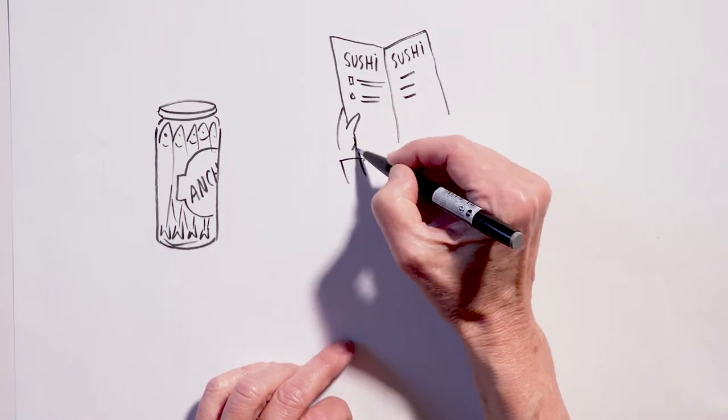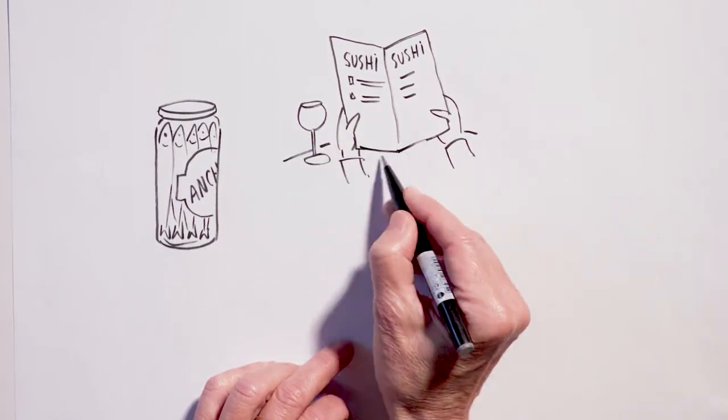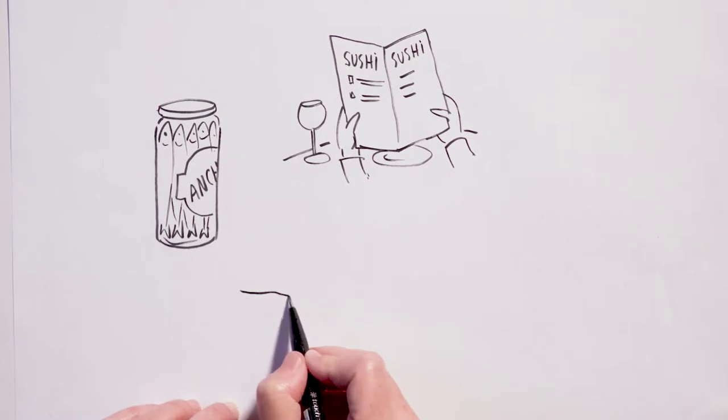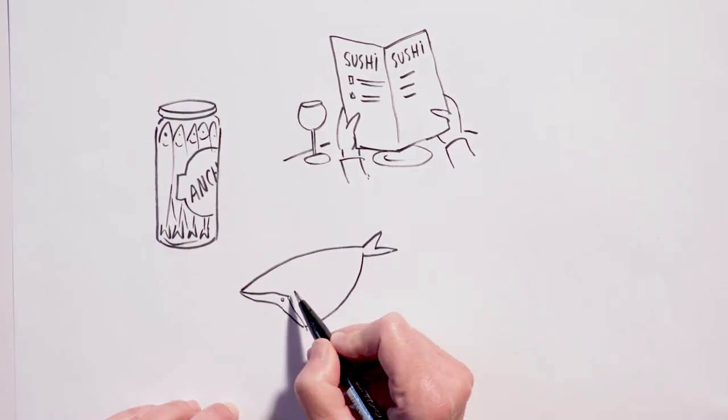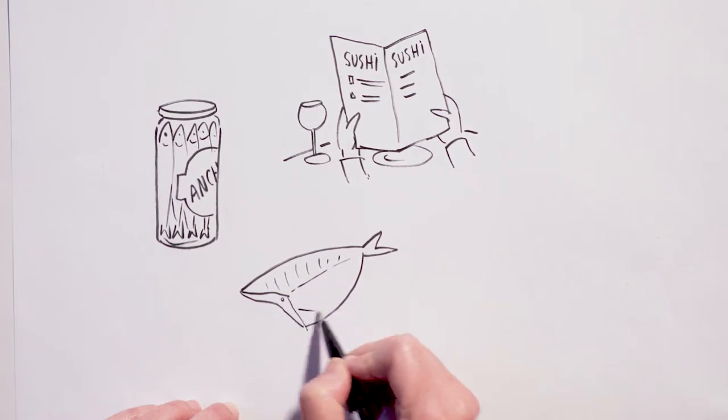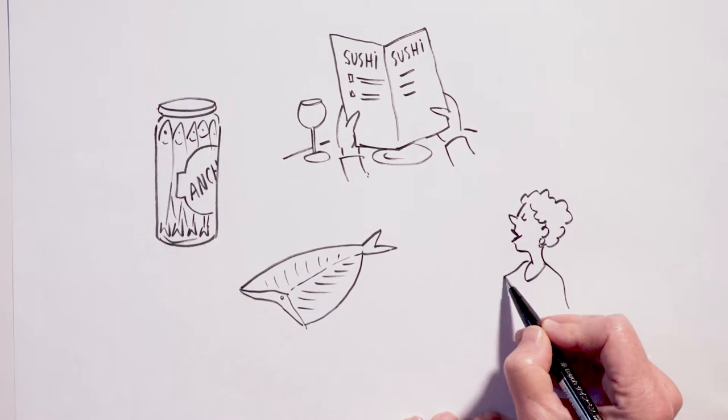If you eat sushi in a restaurant, the restaurant is also obliged by law to freeze all the fish beforehand. So as long as it's a reputable restaurant, no need to worry. And what about salt cod or other dried fish? Those aren't cooked either, but the way that they're dried and salted kills the parasite. So they're safe.